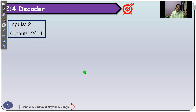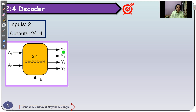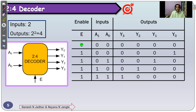Now let's understand the 2-to-4 decoder. The number of input lines are 2 and output lines are 2 squared, that is 4. The inputs are A1 and A0, and outputs are Y0, Y1, Y2, Y3. One more signal is added — the enable signal. The enable signal is important because when both inputs are 0-0, without the enable signal this decoder will not work and all outputs will remain 0. If enable equals 0, whatever the inputs A1 and A0, the output will always remain 0-0-0-0.